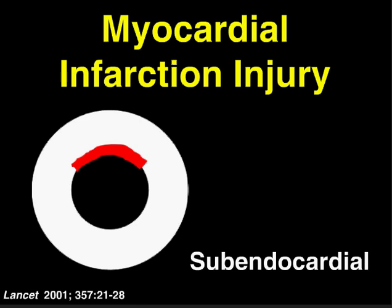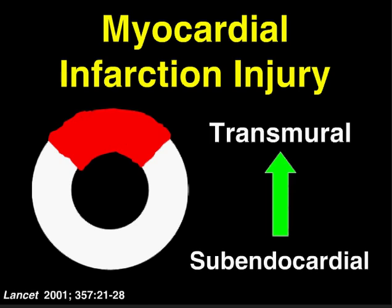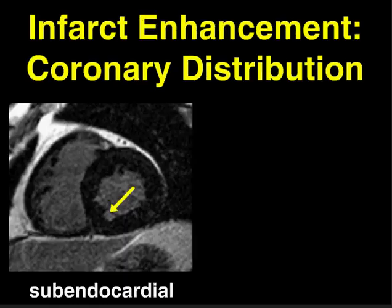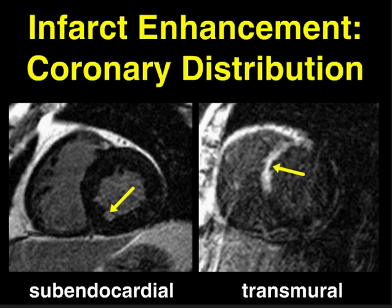To answer that question, we turn to what we know about myocyte injury as a result of infarction. We know that the first cells that are damaged are in the subendocardium, and then there's a wave front of injury that extends from the subendocardium through the wall. So the contrast enhancement we see on delayed enhancement imaging as a result of infarction is always in the subendocardium, and then extends variably through the rest of the wall.